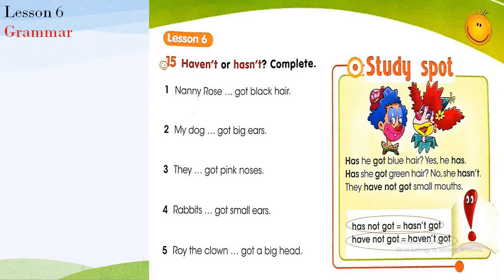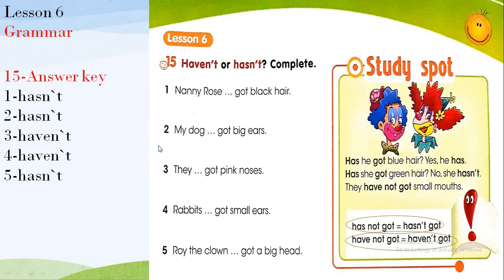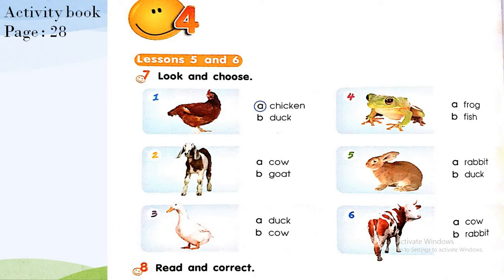Now let's start our lesson. Go to your activity book, page 28. Now look and choose. These are pictures of animals and you have a choice between two words. One is already done — we have a chicken.